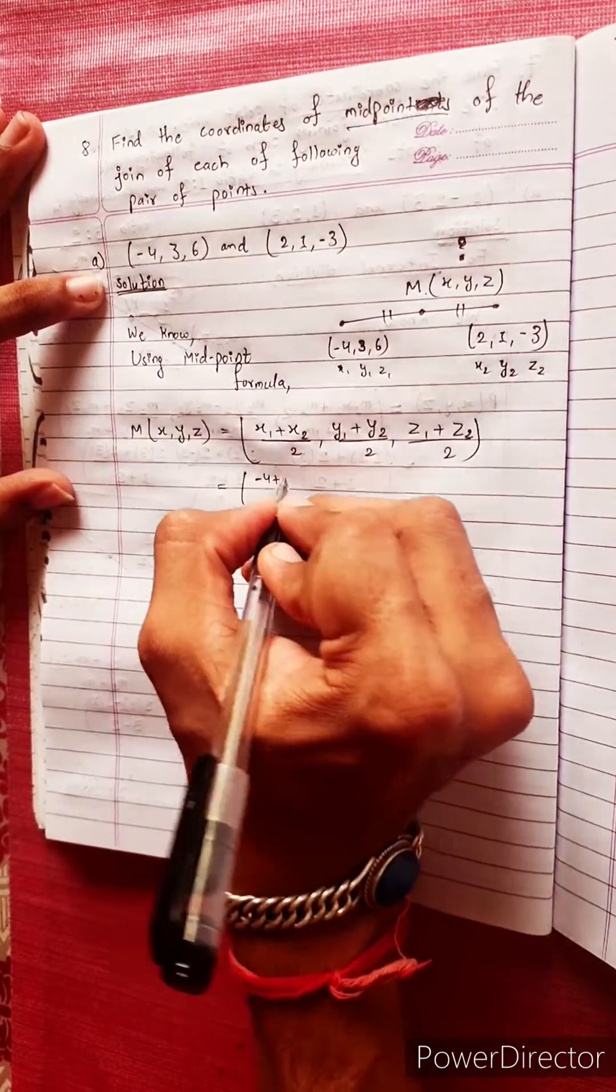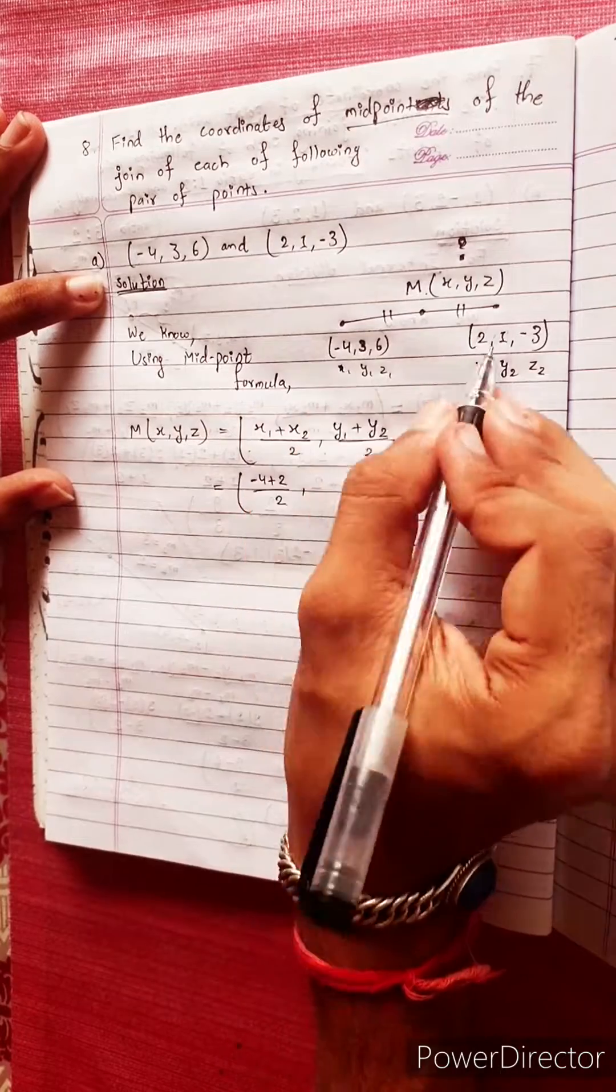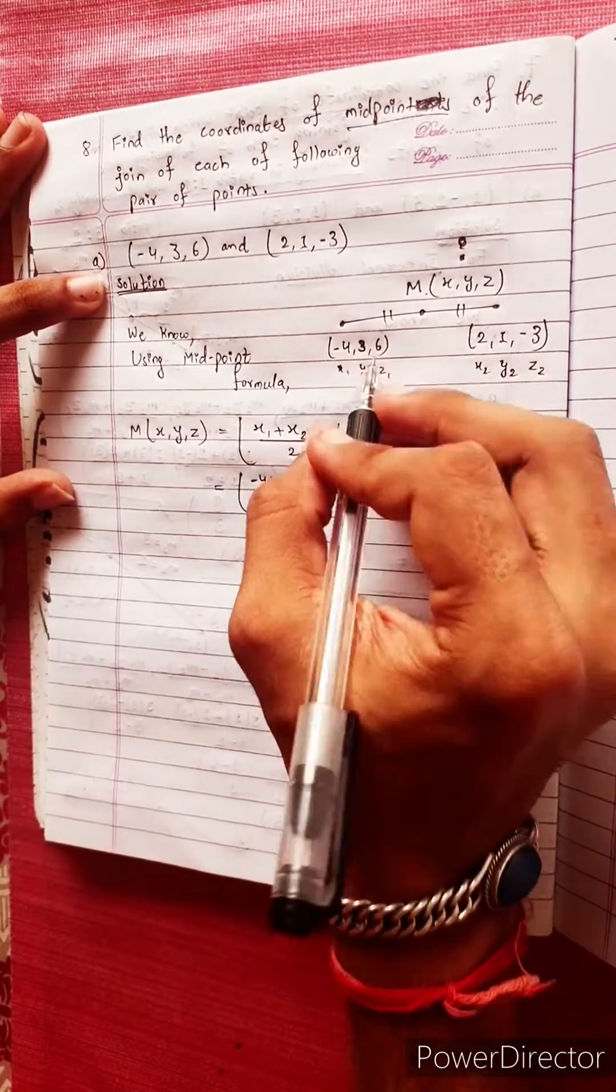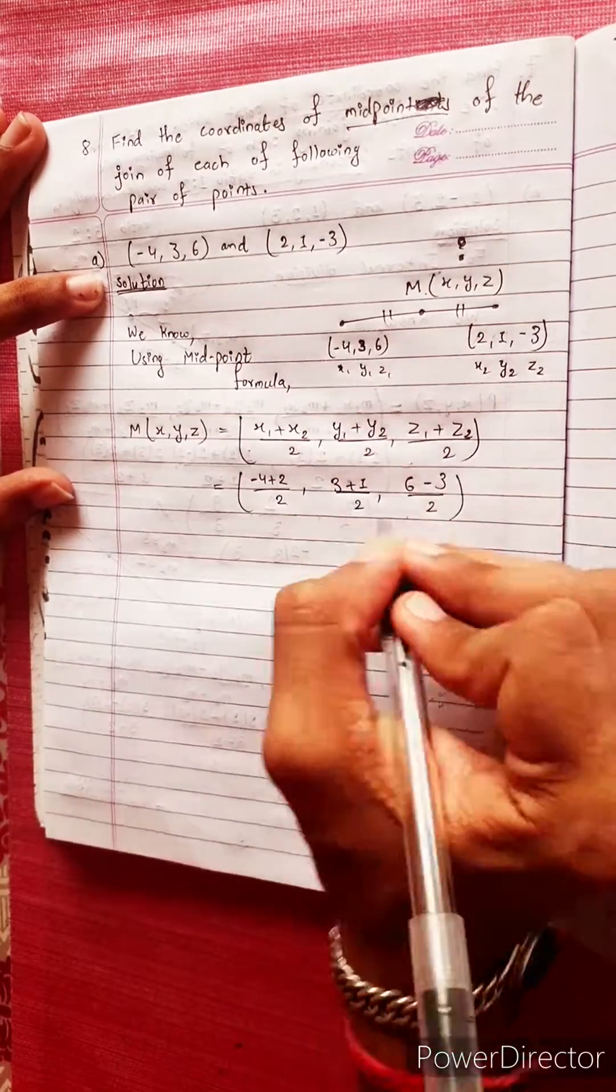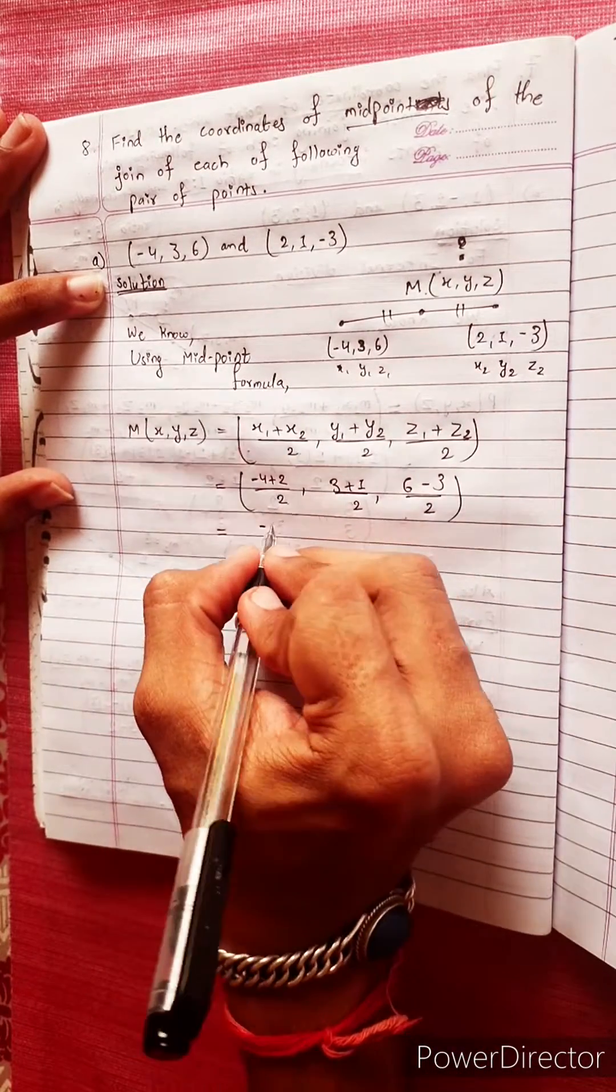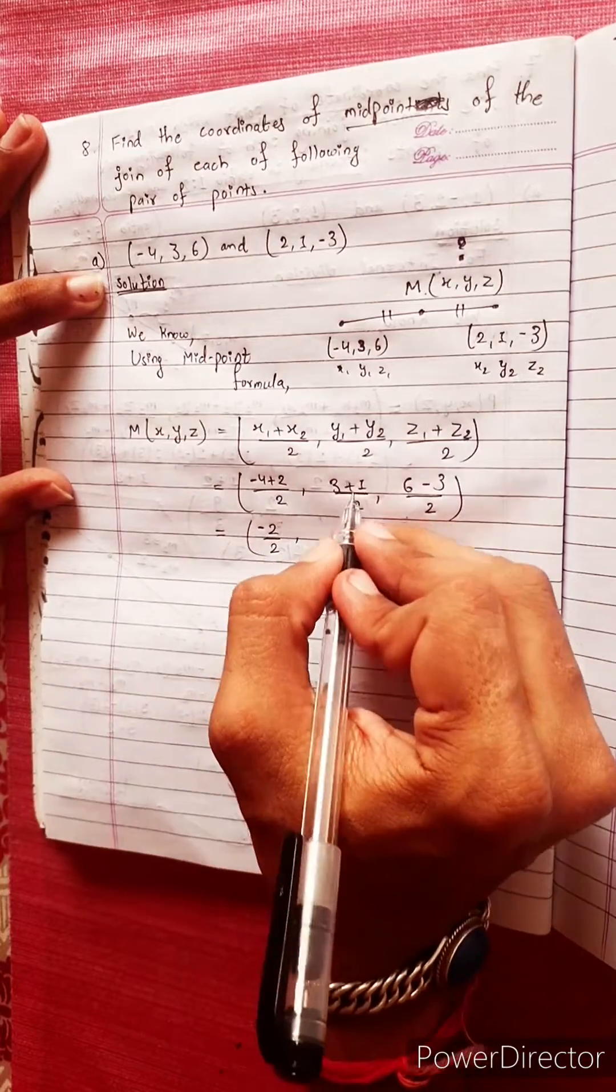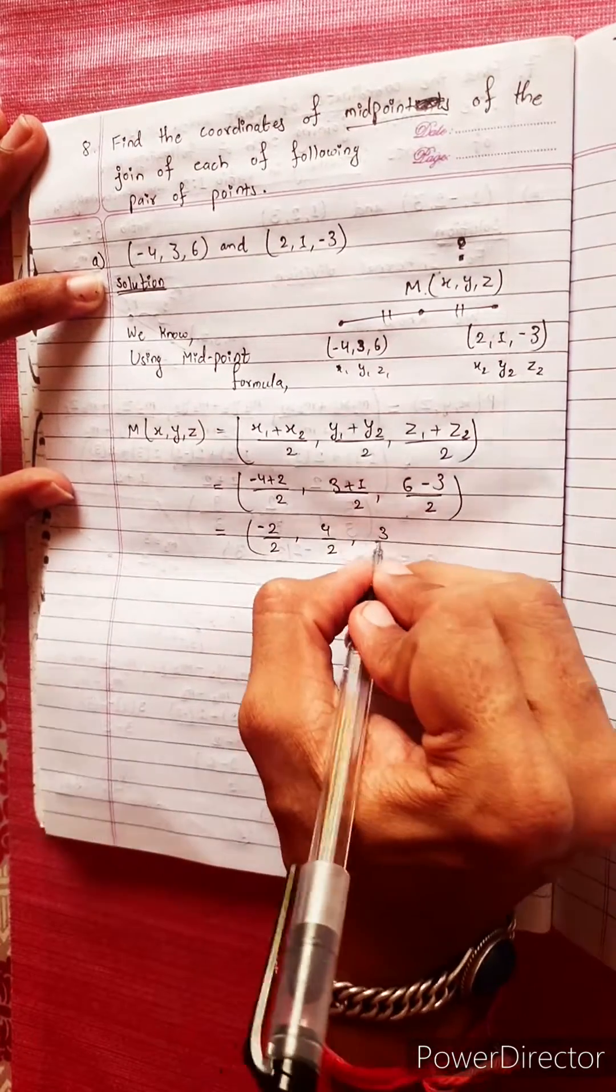Minus 4 plus 2 divided by 2, 3 plus 1 divided by 2, 6 plus minus 3, 6 minus 3 divided by 2. Equals to minus 2 by 2, 4 by 2, 3 by 2.